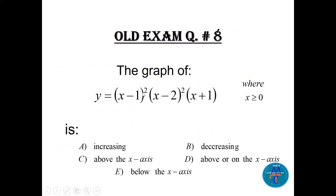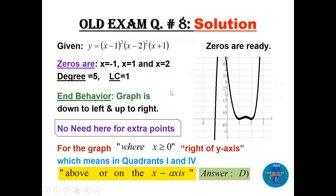Question 8: (x minus 1) squared times (x minus 2) squared times (x plus 1). Multiplicities are even, even, and odd respectively. For x greater than or equal to 0 — meaning the right side of the y-axis, quadrants 1 and 4 — we need to determine whether the function is increasing, decreasing, or above/below the x-axis.